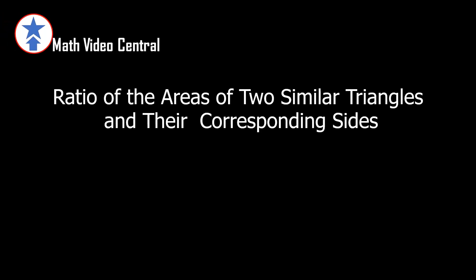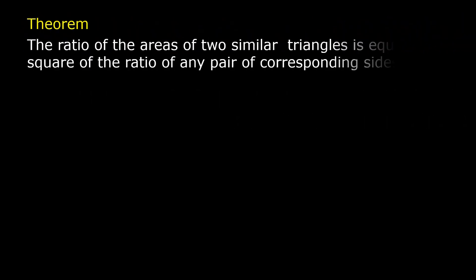In this video, we are going to solve a problem involving the ratio of the areas of two similar triangles and their corresponding sides. We are going to apply this theorem in solving a problem: the ratio of the areas of two similar triangles is equal to the square of the ratio of any pair of corresponding sides. Let us consider these two triangles.